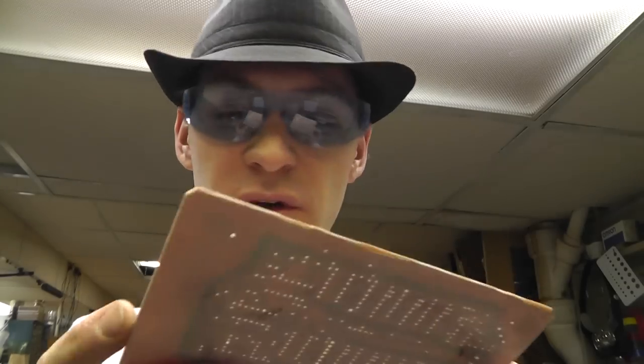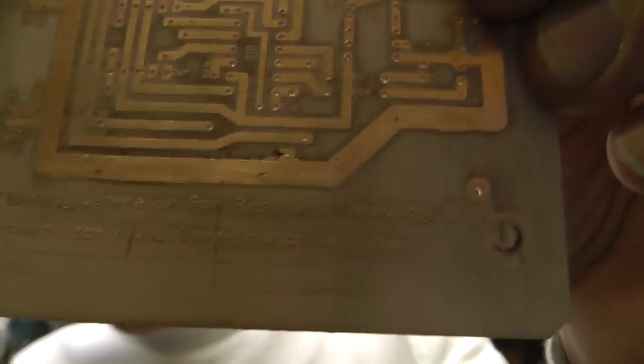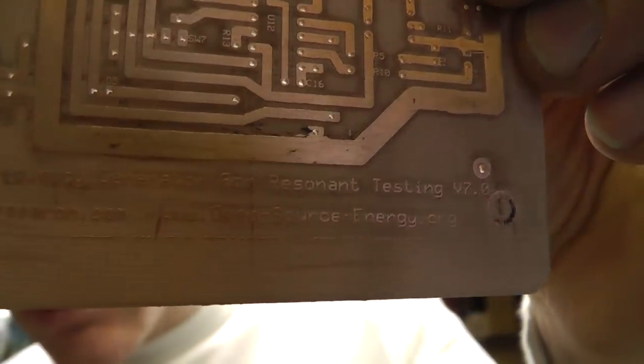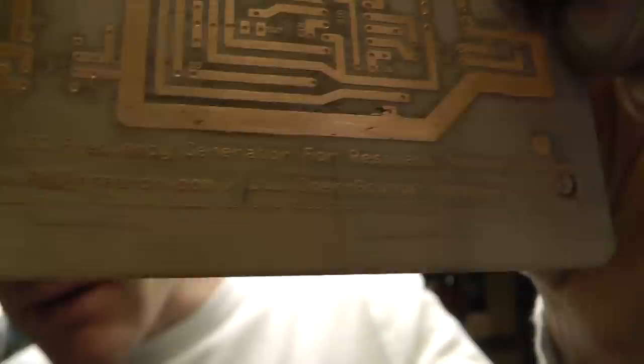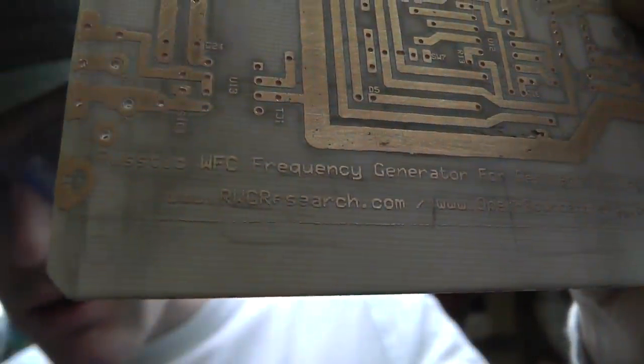So, that's how you etch a circuit board. This is the rustic frequency generator 7.0. And yeah. Kevin Williamson. Russell Grease. There you go. Peace out, homie-gees. Take care. Catch you next time. Thanks for watching. Leave a comment.